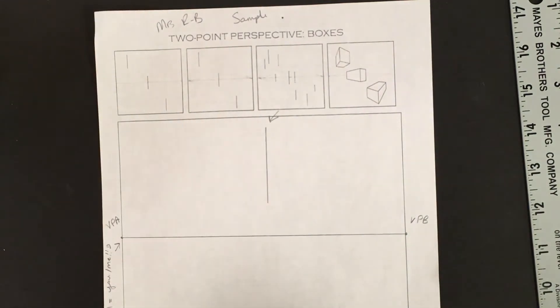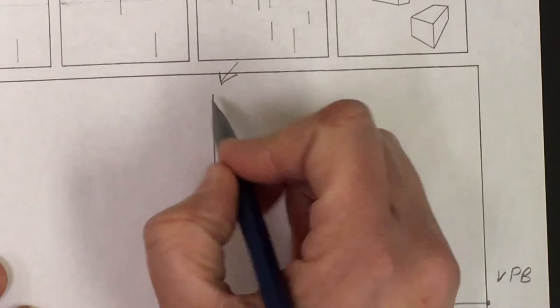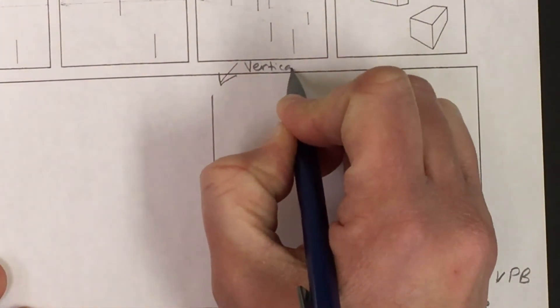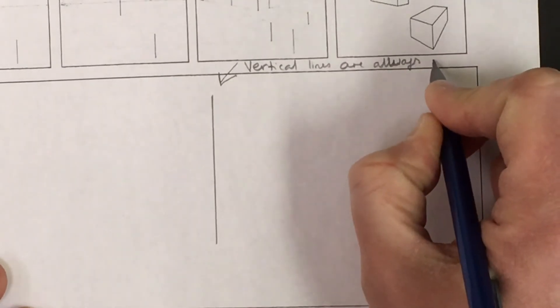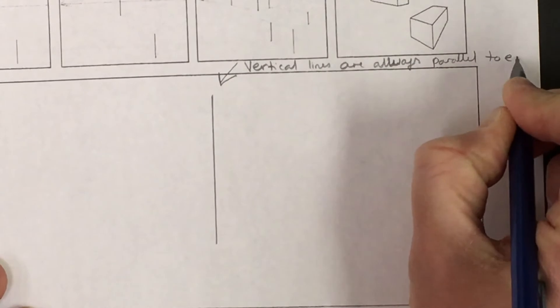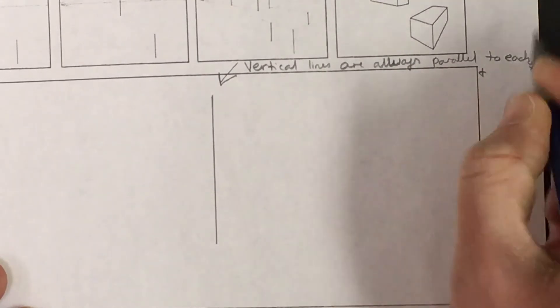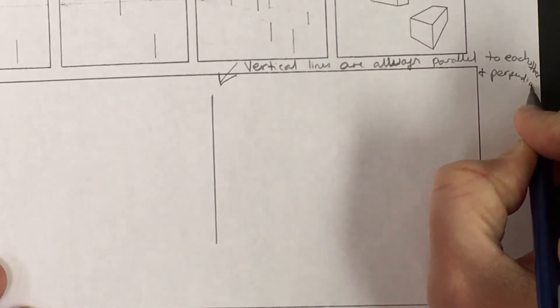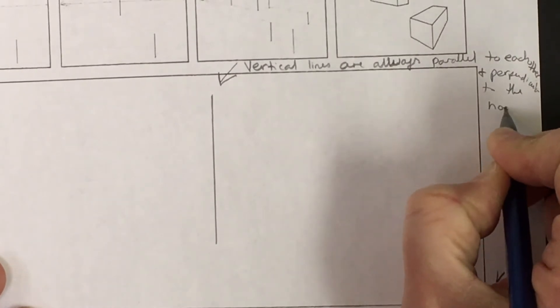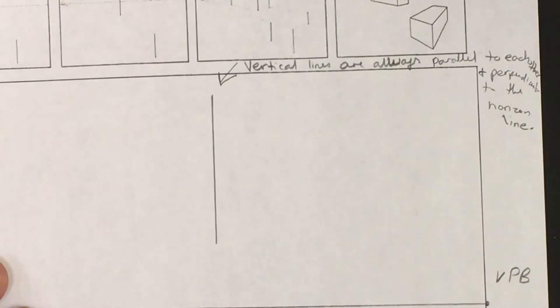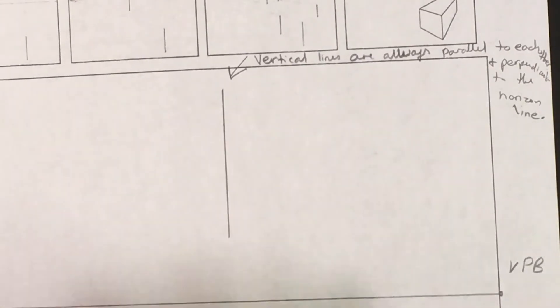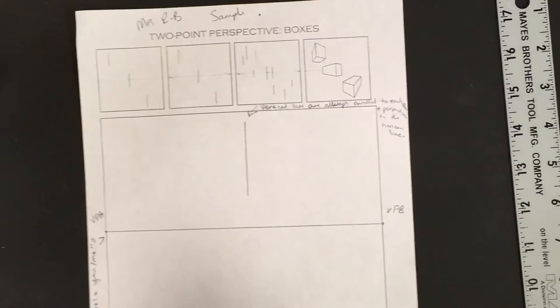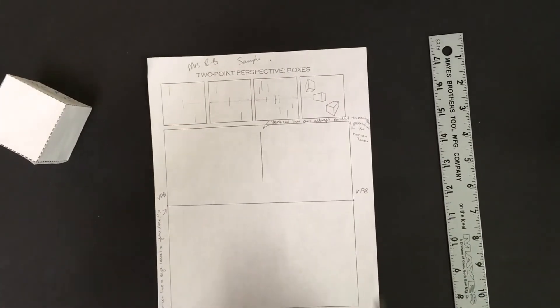So however we make that, that's max height. I want us to take another little note here. Give yourself an arrow. I'm going to zoom in. A little arrow to this. Vertical lines are always, always, parallel to each other and perpendicular to the horizon line. So what I mean by that is any other vertical line I put into this drawing is going to be parallel to each other. And all of these lines should be meeting in a 90 degree angle to our horizon line. Let's zoom back out.